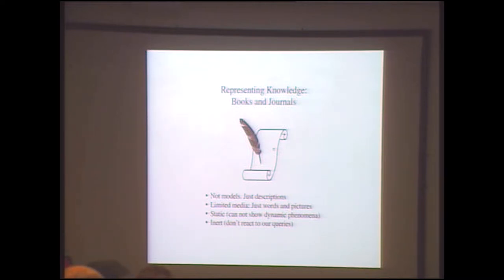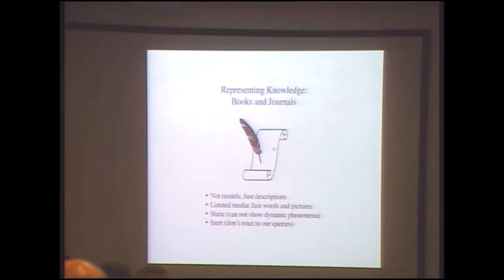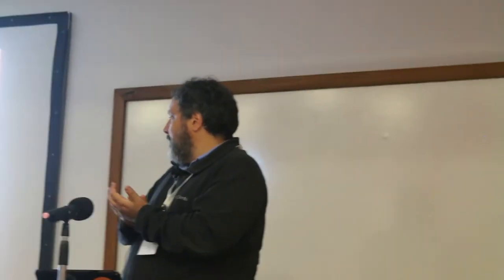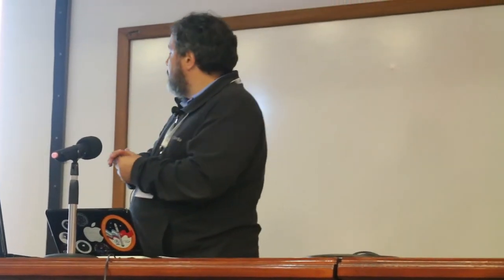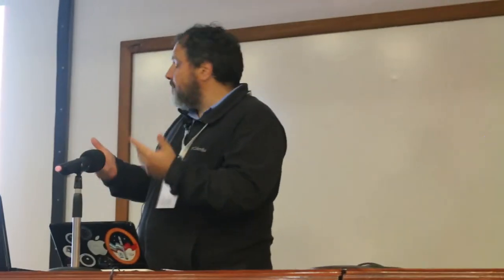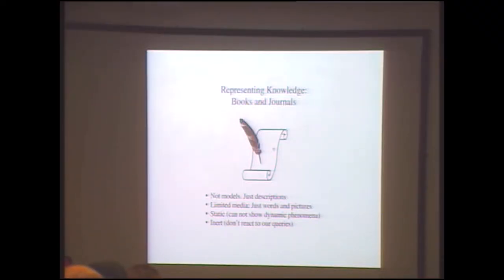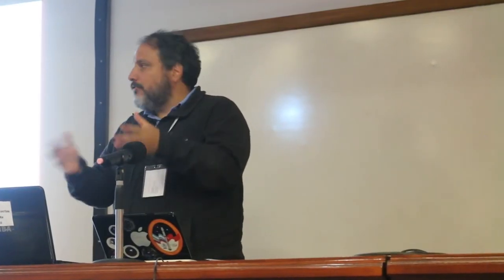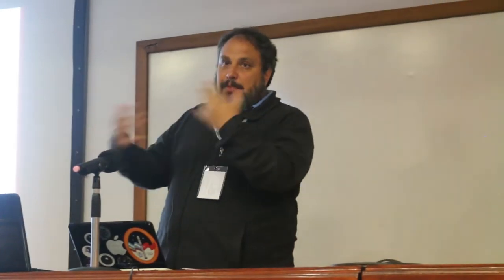The oldest way — the first one available to us — was to write it down on paper. What happens when we represent our knowledge on a piece of paper? Paper and ink cannot hold a model; it can only hold a description. And that description uses very limited media: only words and maybe pictures. It is of course static — it will not change. We cannot show information that changes over time; we can only describe that change in words. And it doesn't react to our queries. No matter if we understand it or not, or we have new questions, or we want to expand that knowledge, it still looks the same.